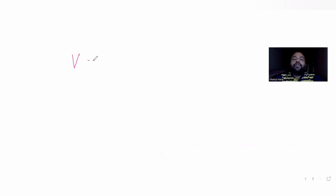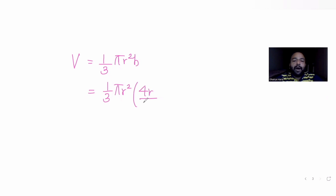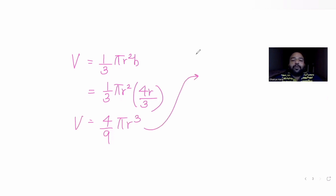The change in volume with respect to time was given. I know volume of a cone is (1/3)πr²h. I convert the entire volume in terms of only one variable, r. Since h equals (4/3)r, substituting gives (1/3)πr² times (4r/3), which equals (4/9)πr³.